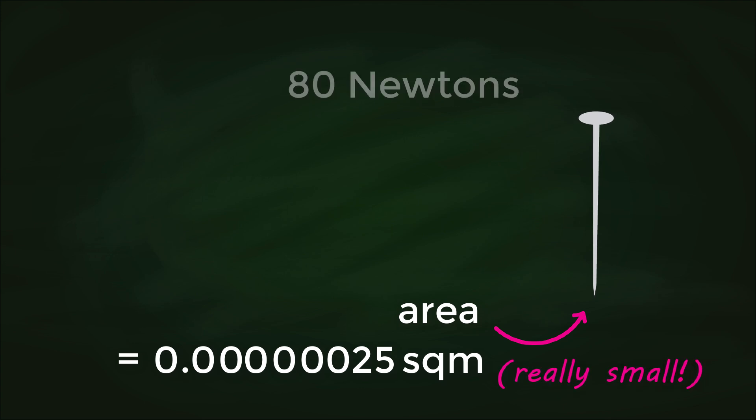Now imagine you were to apply exactly 80 newtons of force to this end of the pin—the same force that the box was applying to the table—and that the entire 80 newtons was transferred through to the pinpoint. Let's calculate the pressure this pin would then be exerting on the table.